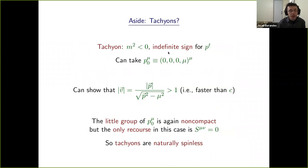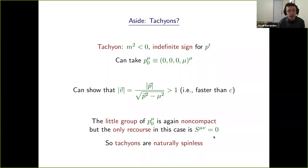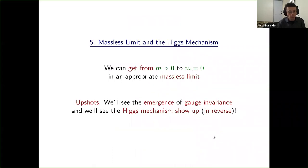As an aside, one can also consider tachyons — particles with negative mass squared, where the sign of the energy is no longer well defined. The simplest four-momentum is purely space-like, and computing speed gives a value greater than one. The little group is unbounded again, and there is no clever way to eliminate the unboundedness, so we simply have to set the spin equal to zero. This provides a neat explanation for why tachyons are naturally spinless.